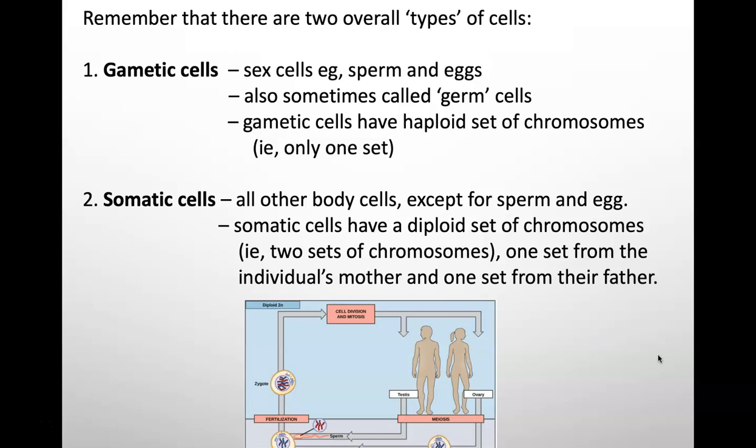The other type of cell is somatic cells and they take up the vast amount of space in your body. They are all your other cells in your body except for sperm and egg. Somatic cells have a diploid set of chromosomes. Diploid means two. Ploidy means sets of chromosomes. So if you have a diploid cell, that means that cell has two sets of chromosomes, one set from the mother and the other set from the father.